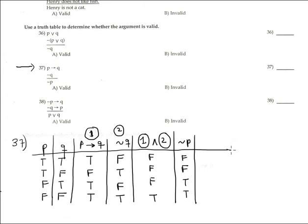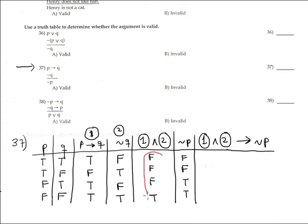Finally, we form a new statement. The new statement is formed by a conditional between the conjunction of the premises and the conclusion. So we analyze the conjunction column and the conclusion column. The conditional is only false when the antecedent is true and the consequent is false — but in this case that never happens. Therefore it always is true.